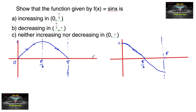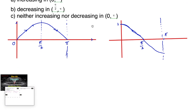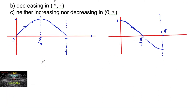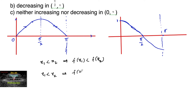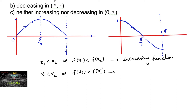Let us study how to solve this problem. We can use two methods. In the first method, for x1 < x2 where x1, x2 belong to the real numbers, we show that f(x1) < f(x2) for an increasing function, and f(x1) > f(x2) for a decreasing function.